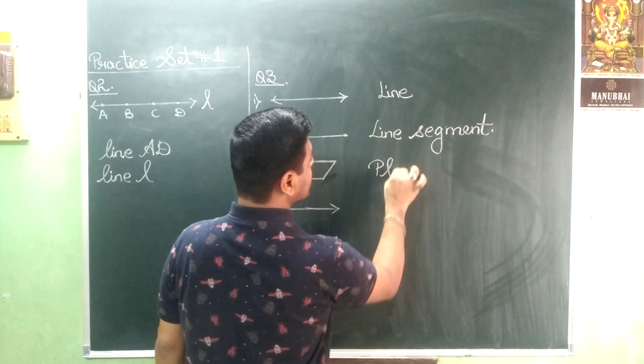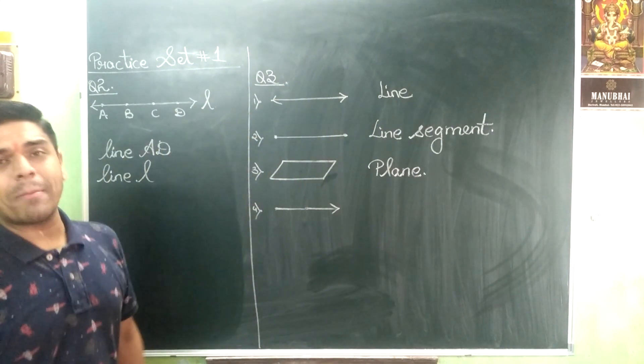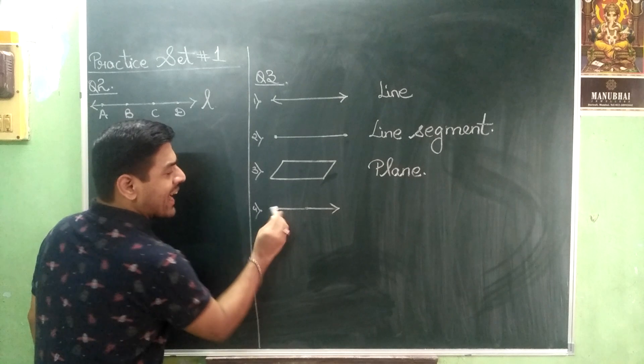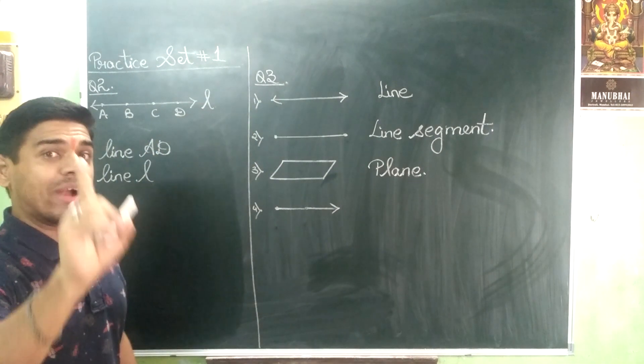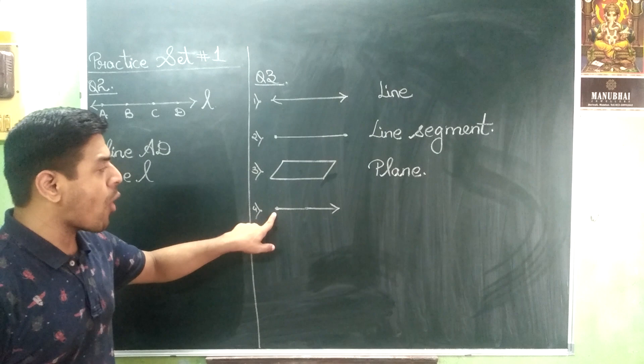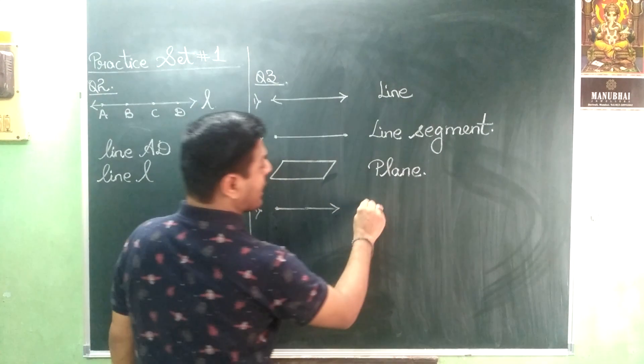And the last and the final match the column is one point extended in one direction, only in one direction. It has a point and an arrow. So you will be writing here ray.